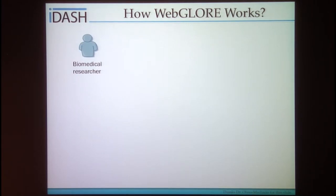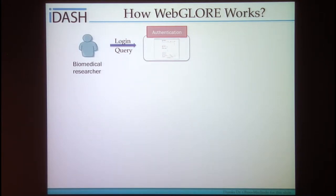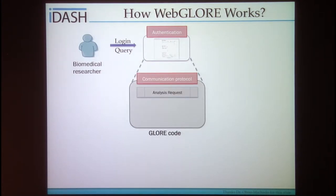Here's a high-level overview of the WebGlow modules. A user first accesses the authentication page and provides login information. Then she can initiate a query — for example, building a logistic regression model for hospital readmission based on age, gender, and socioeconomic status. The query passes through the communication protocol to the participating institutions.